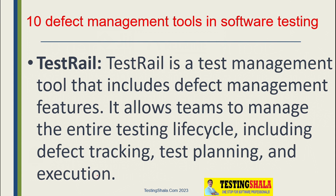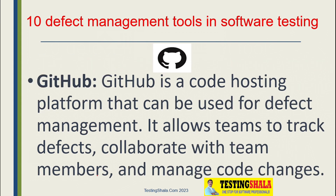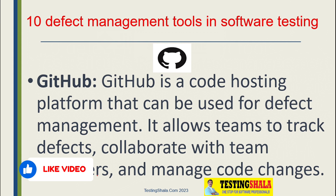The next type of defect management tool is GitHub. GitHub is a code hosting platform which can also be used for tracking and managing defects. Using GitHub we can collaborate across different team members and manage code changes as well. These are the 10 important defect management tools which are widely used in the IT industry.